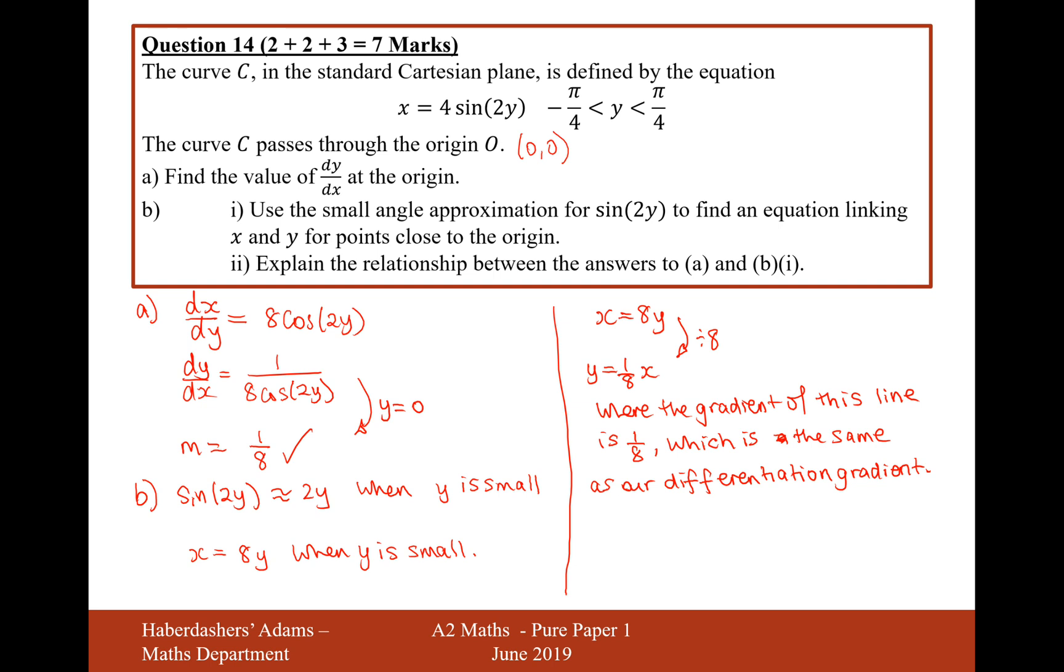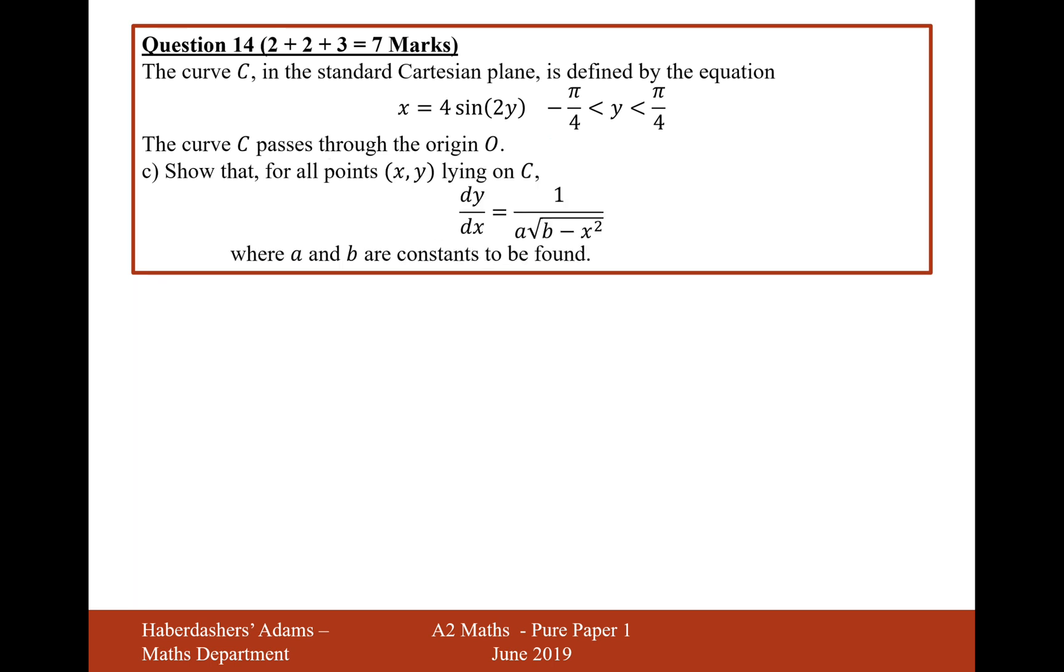Okay, so that's the answer to a, b(i) and b(ii). Let's now move on to part c. So we have part c which is show that for all points (x, y) lying on C, dy by dx is equal to 1 over a root b minus x squared, where a and b are constants to be found. So we already have from the first part that dy by dx is equal to 1 over 8 cos 2y. So now what we just need to do is somehow turn this cos 2y back into something to do with x's. So that means I'm going to have to find some relationship between cos 2y and sine 2y. Now I could use double angle formula here, but I think it's actually going to be a bit more straightforward if I just return to sine squared plus cos squared equals one, that bog standard identity.